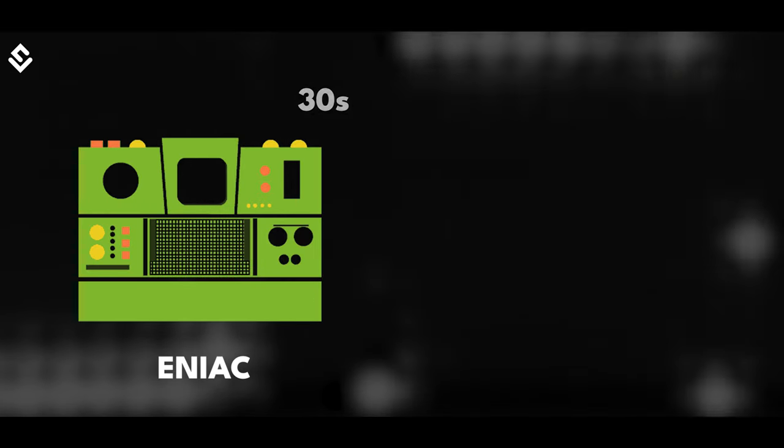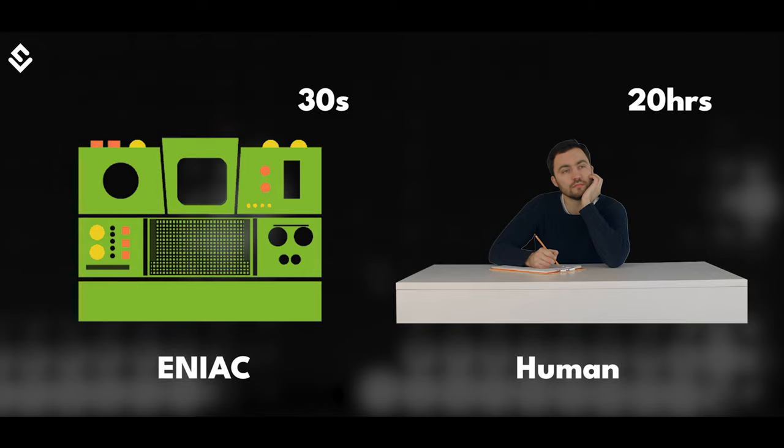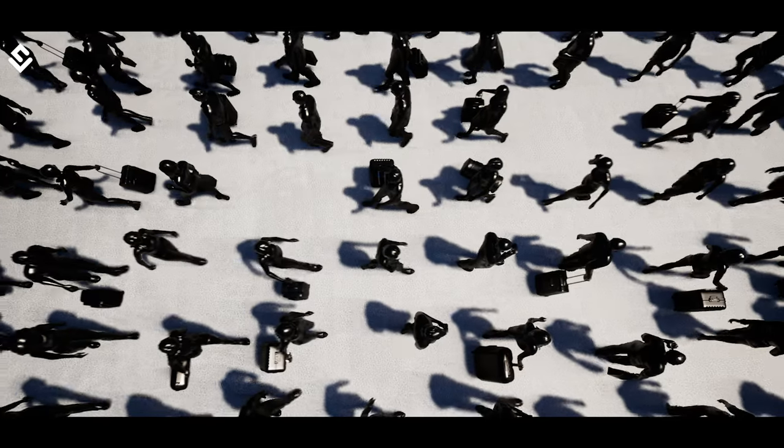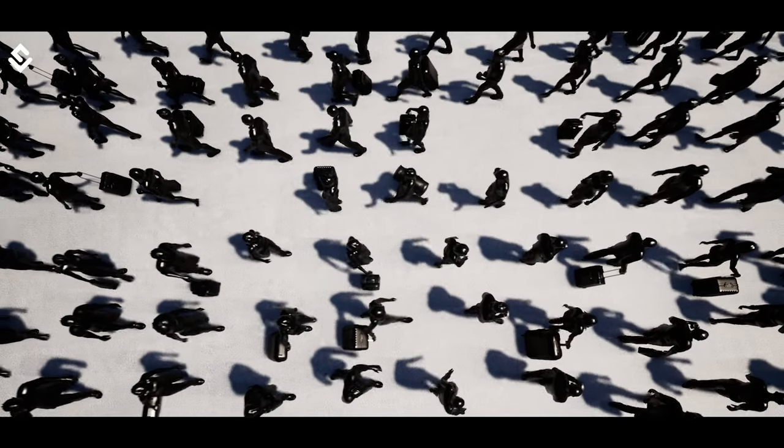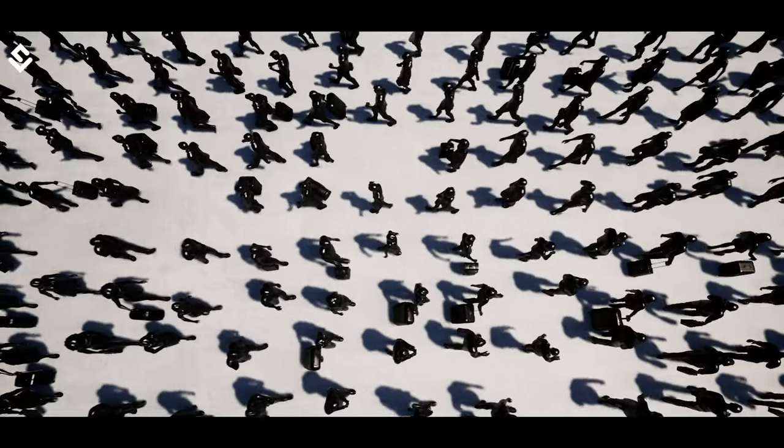It was a thousand times faster than electromechanical computers. As ENIAC calculated a trajectory in 30 seconds that took a human 20 hours, one ENIAC could replace 2,400 humans.